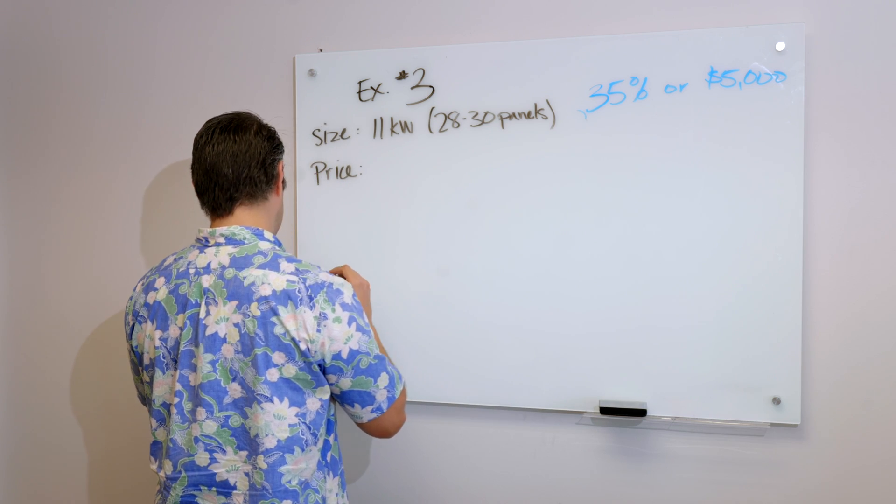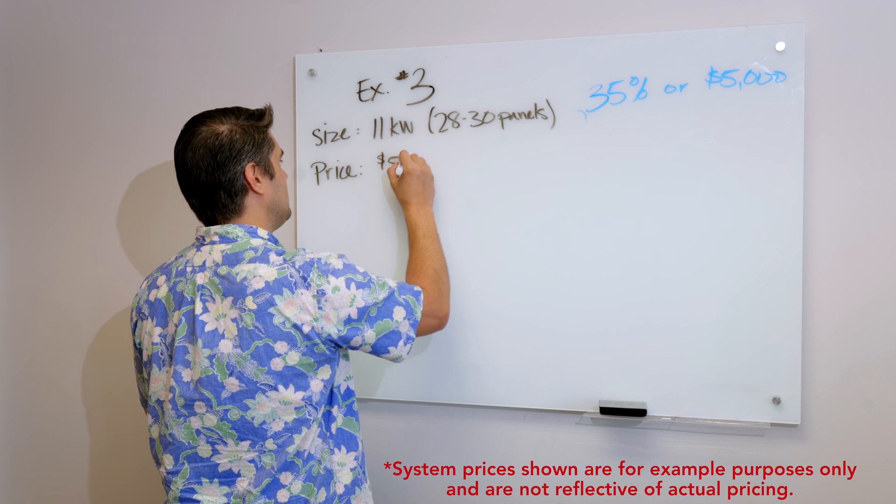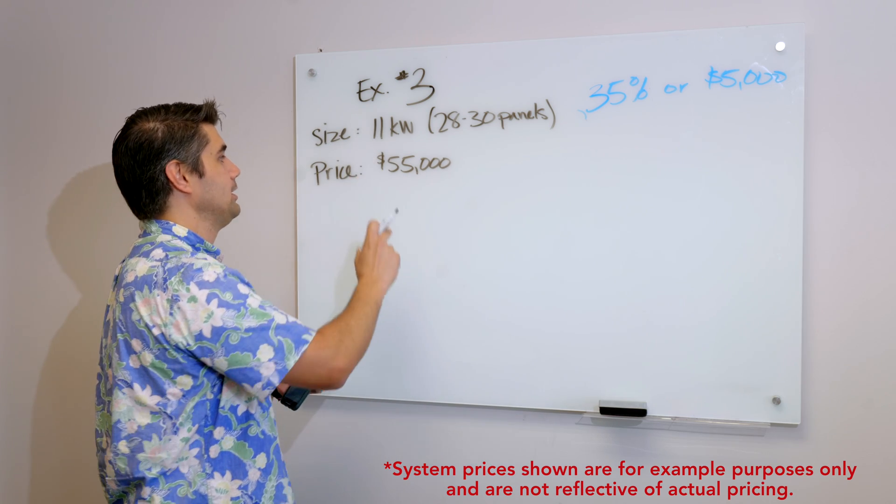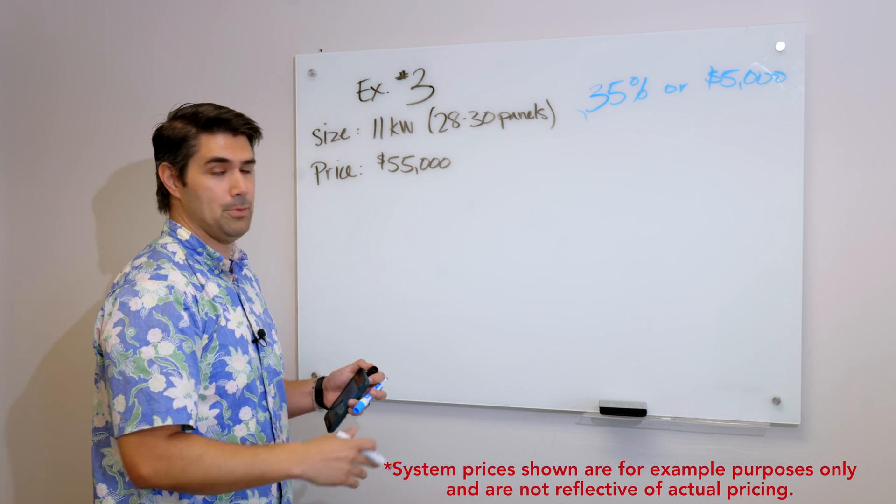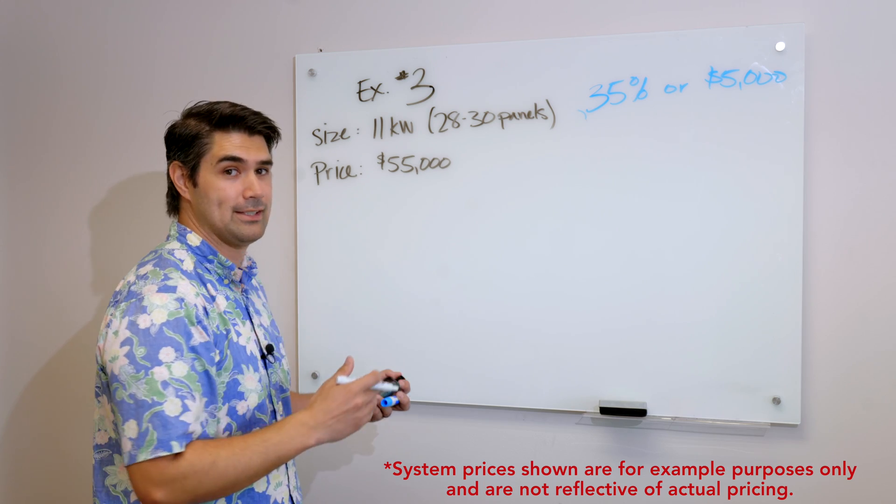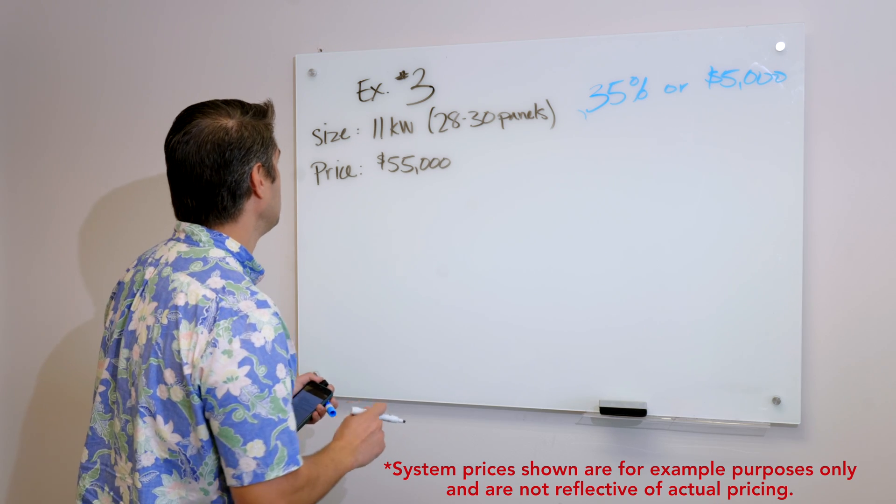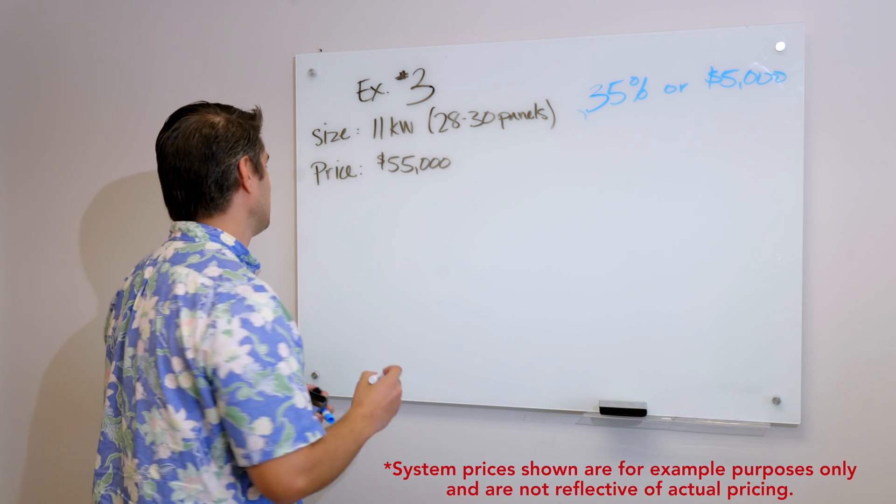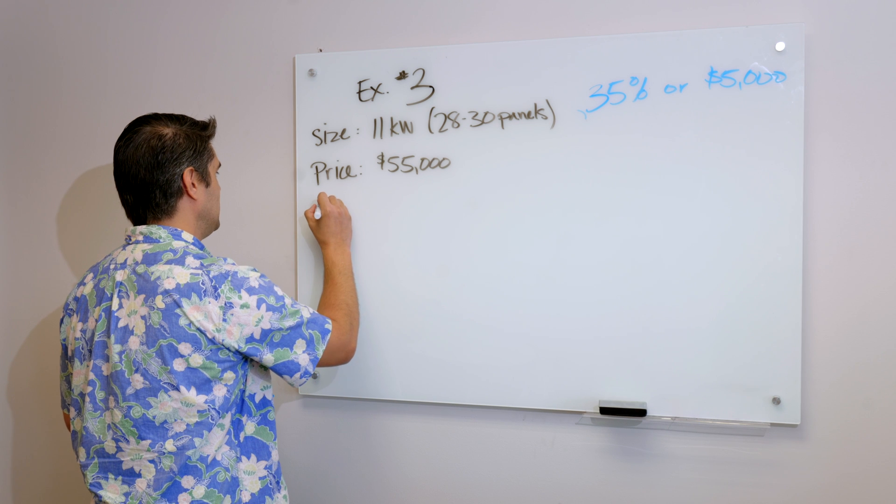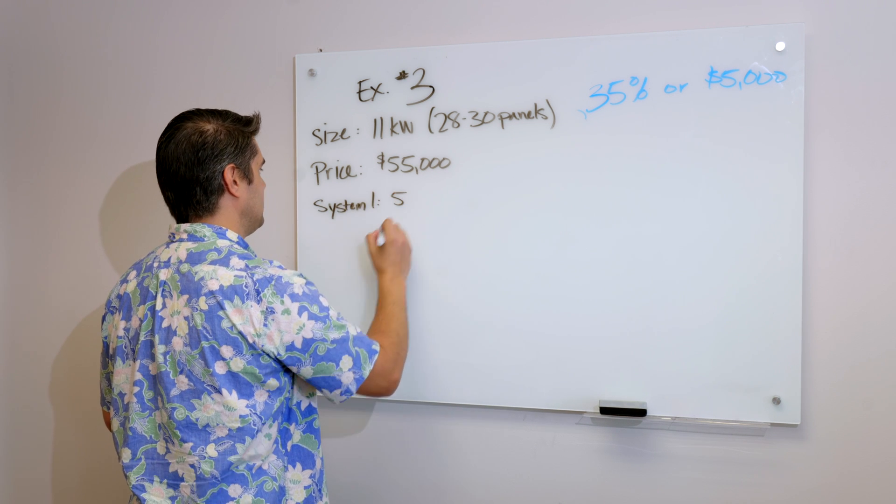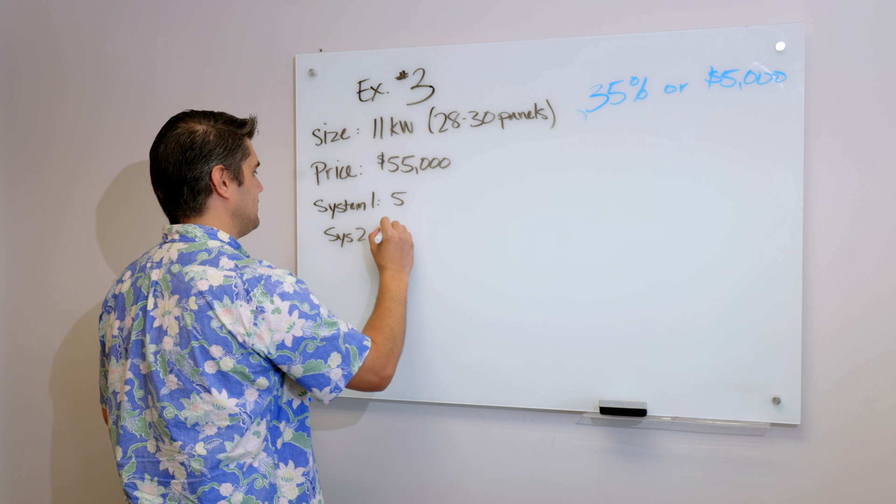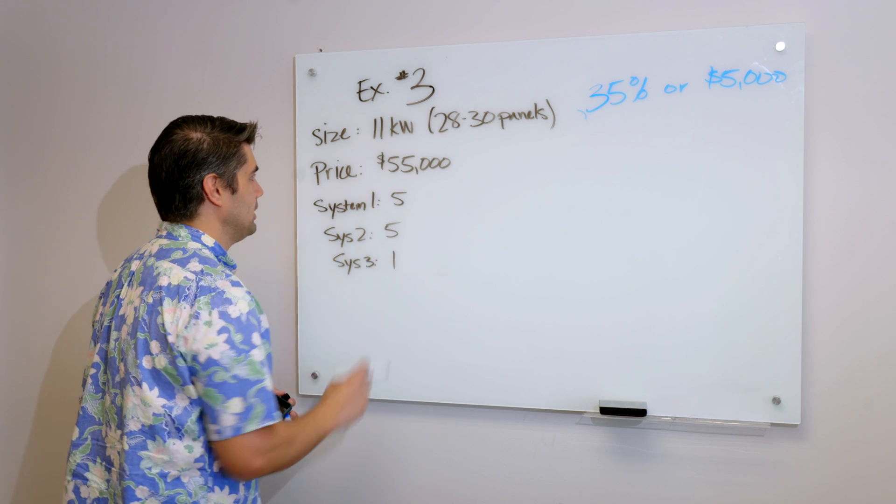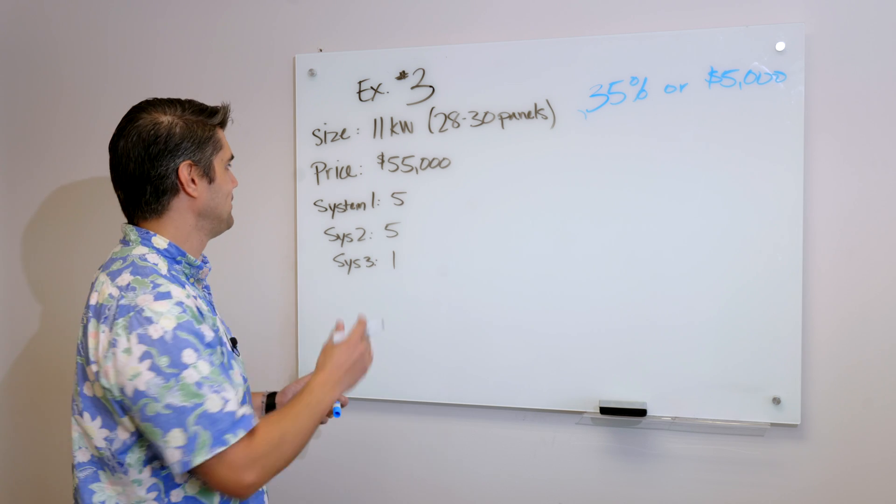Now keep in mind, I'm just making up these numbers. It may be more than that and it may be less than that. The purpose of this is just how to calculate that state tax credit. So we have 11 kilowatts. First thing we need to do, how many systems is this? Well, it's three systems, right? So system 1 is 5 kilowatts. System 2 is 5. And system 3 is 1. 5 plus 5 plus 1 equals 11.